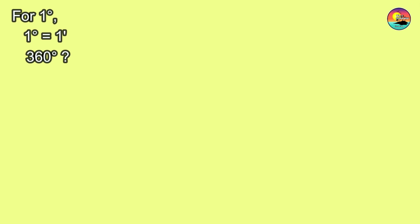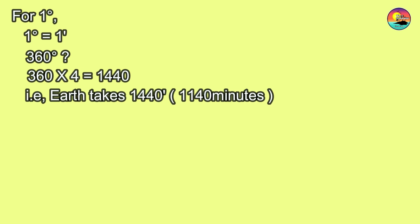For 1 degree, it takes 4 minutes. So 1 degree is equal to 4 minutes. For 360 degrees, that is 360 multiplied by 4, which is equal to 1,440 minutes.